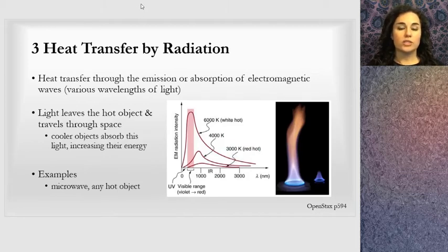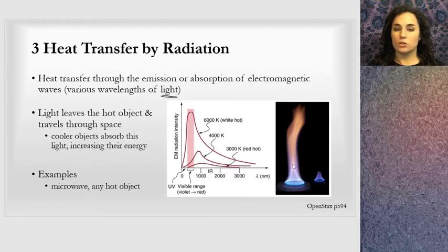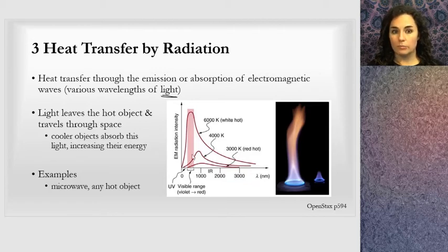The third process of heat transfer is radiation, by which we mean heat transfer through emission or absorption of electromagnetic waves. Electromagnetic waves is the same thing as light. That's why you see a picture of a fire here. Not only is the fire hot, but it is also radiating light which we see. There's also light in the spectrum that we cannot see, various wavelengths of light. Light leaves a hot object and travels through space. Cooler objects may get in the way and absorb this energy and thus increase their energy. Here we have a Boltzmann distribution for the wavelength of light. For hotter objects, we're going to have higher energy, lower wavelength light being emitted from it.